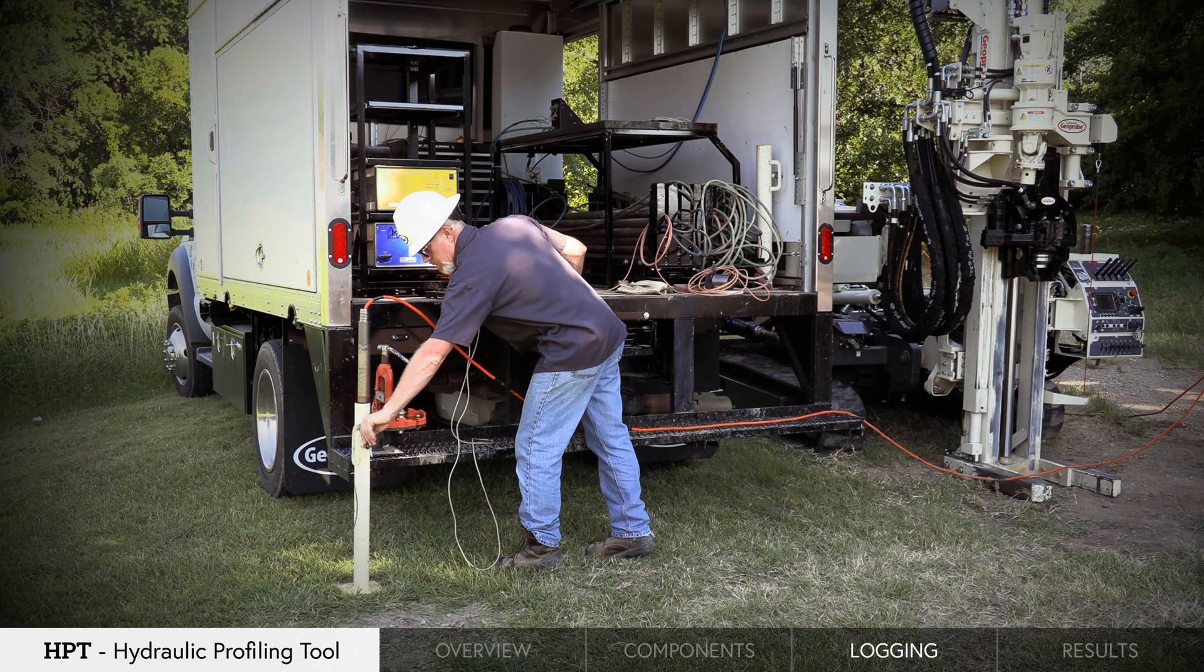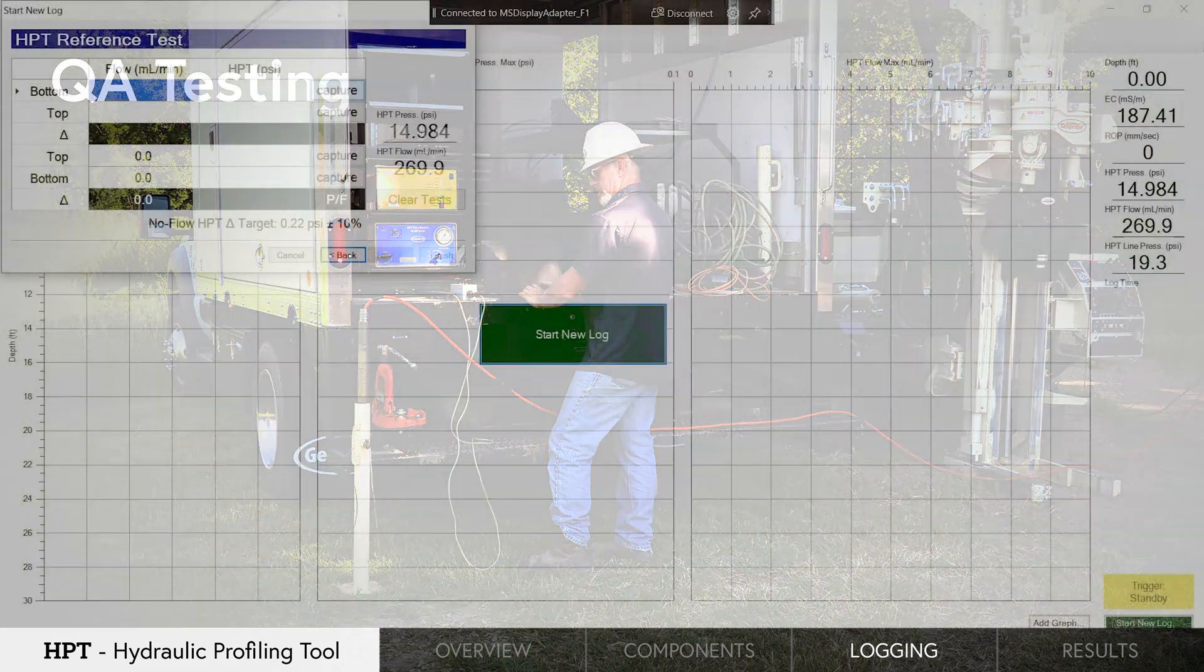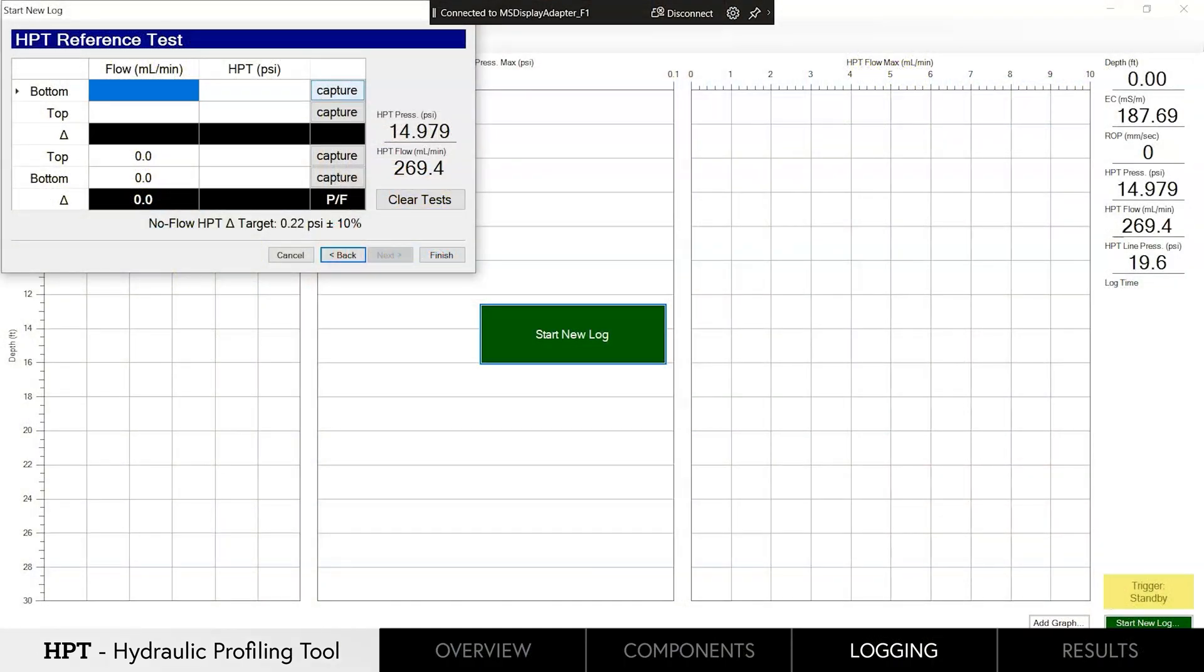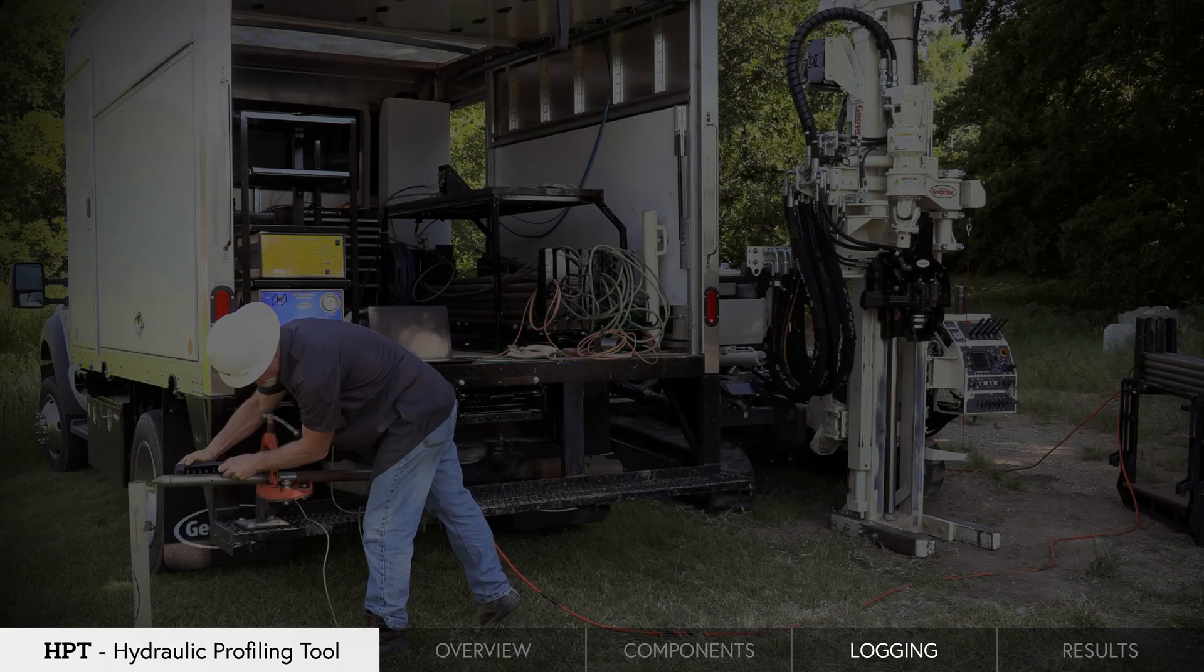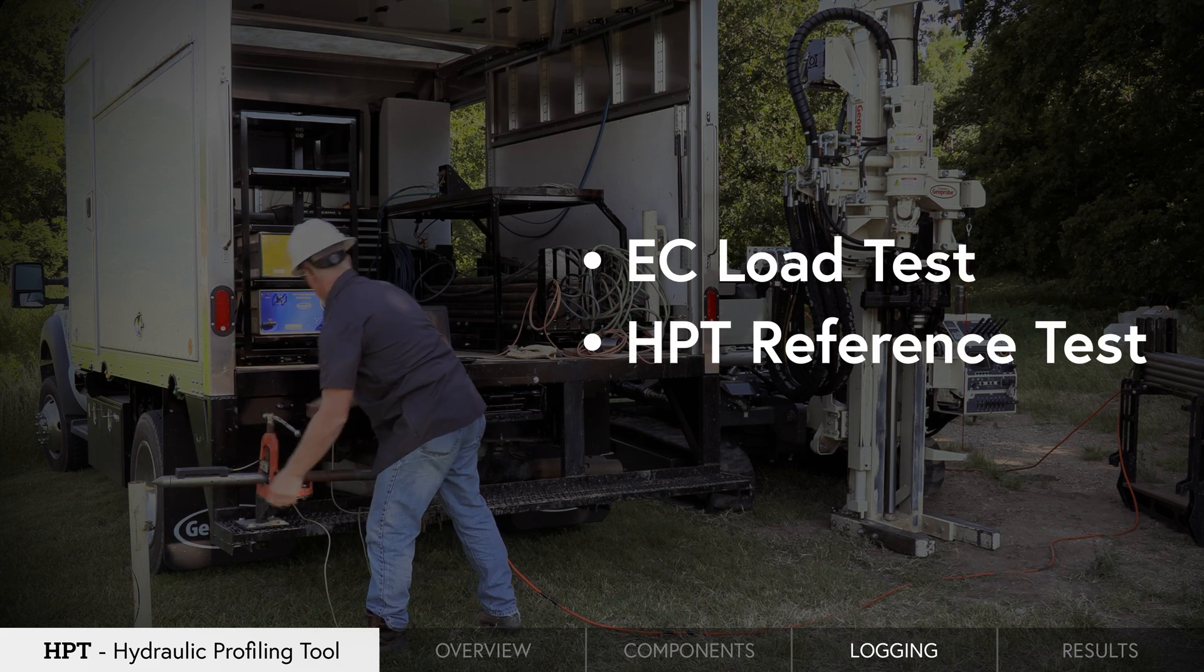With equipment set up, QA testing must be done before and after each log to ensure that the equipment is working properly and generating good data. Testing includes an EC load test and HPT reference test.